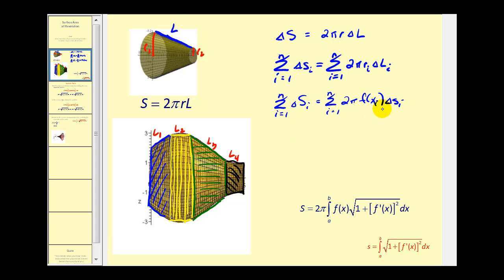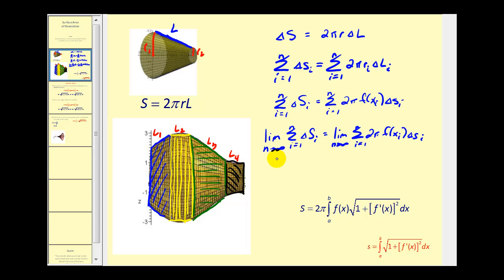We're going to take the limit as n approaches infinity of this sum, which gives us our definite integral. The limit on the left gives us the surface area. Two pi is a constant, and we're left with the definite integral of f of x times the square root of one plus f prime of x squared, which is equal to our arc length element.